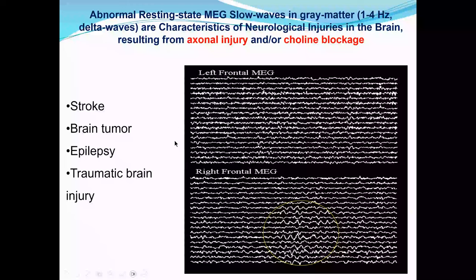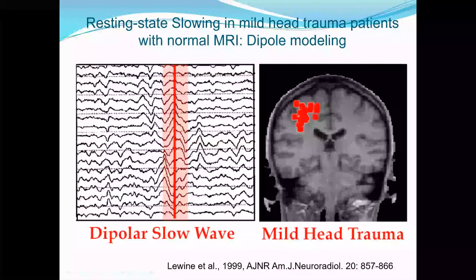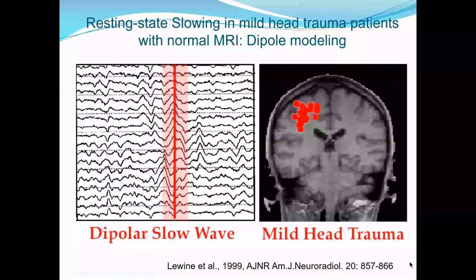You can link the slow wave generation to a specific TBI event when you rule out other possibilities using structural imaging CT/MR and medical history. In the past, people have been using the dipole approach for source localization of this abnormal slow wave. One limitation is that the slow wave is complicated — there are many sources contributing at the same time — quite different from epilepsy, where the spike discharge at its peak can often be modeled with a single equivalent current dipole.